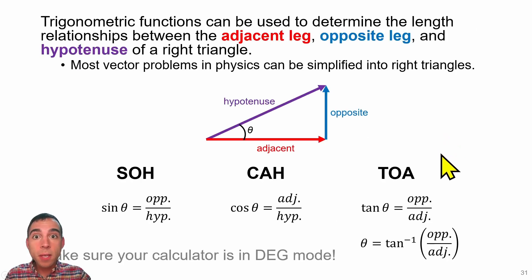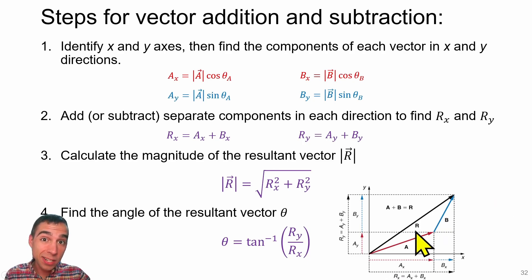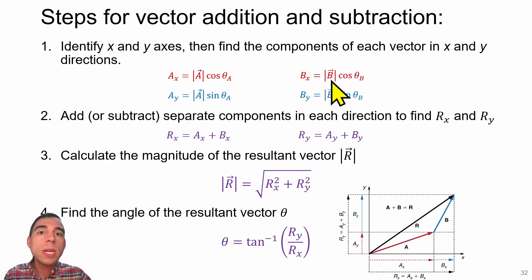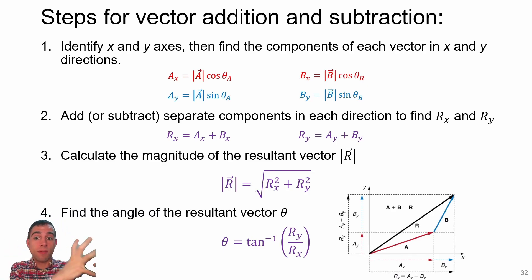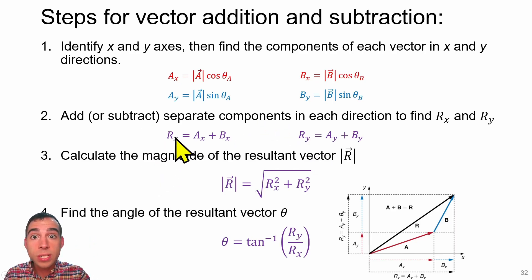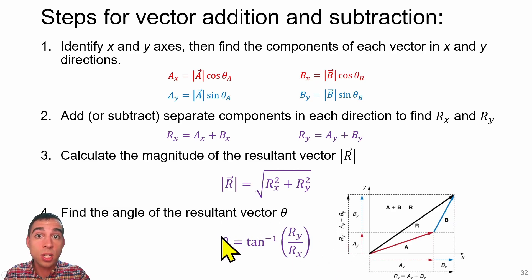As a quick review: sine, cosine, and tangent describe the relationships between different legs of a triangle. If we're going to add two vectors together, since motion is independent in the x and y directions, we add the x components of each vector separately and the y components of each vector separately. This gives us a resultant vector in the horizontal direction and a resultant vector in the vertical direction. We can then use the Pythagorean theorem to determine the total magnitude of the resultant vector, and an inverse tangent to find the angle.